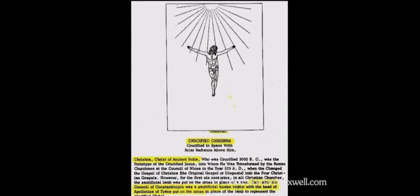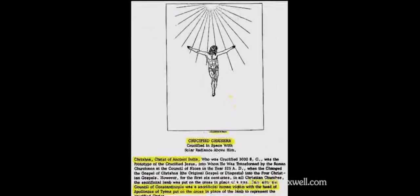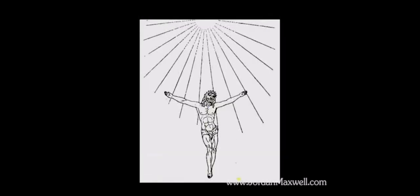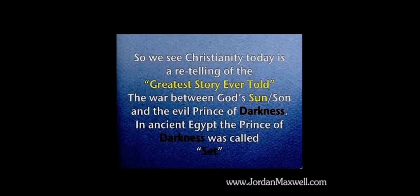The whole idea of putting a human on the cross comes from Krishna, the Christ of ancient India, who was crucified 3000 BC — the prototype of Christ Jesus. You can get the book The Hindu Pantheon in the library, and there are many other reference books talking about the same thing. Krishna looks an awful lot like Christ because Christ, Christos, Christ, Krishna — it's all the same story. So we see Christianity today as a retelling of the greatest story ever told. The Bible is referred to as the greatest story ever told — of course it is. It's just a story.